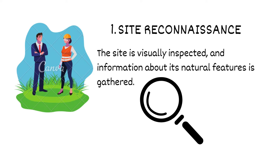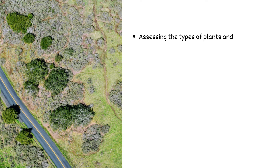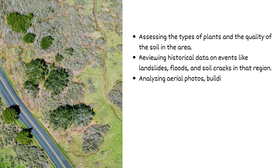Stage one is site reconnaissance — the initial step in investigating a location for a construction project. During this phase, the site is visually inspected and information about its natural features is gathered. Key things we look for include: checking for drainage ditches and areas where waste is dumped; determining the groundwater level by examining wells on the site; identifying springs, swamps and similar features; noting high watermarks on bridges and tall buildings to understand flood levels; assessing the type of plants and quality of the soil; reviewing historical data on events like landslides, floods, and soil cracks; analyzing aerial photos, building blueprints, geological maps and other site documents; examining deep excavations to understand soil layers; and observing cracks in existing structures that indicate settling.